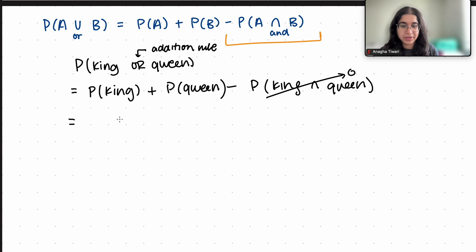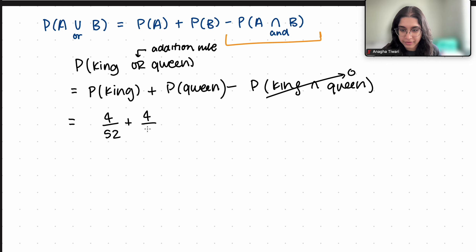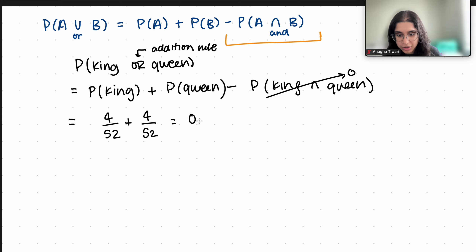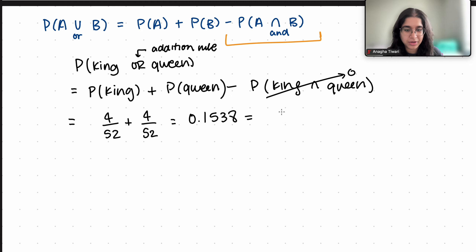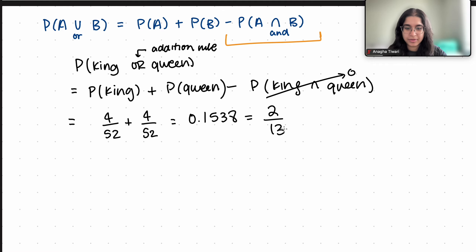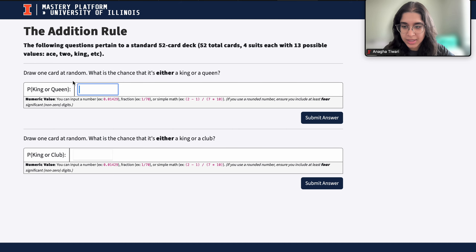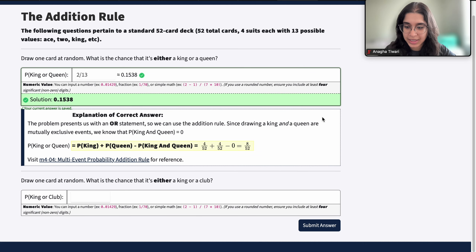In a standard deck of cards there are four kings out of 52, so P(king) = 4/52. Same thing for queens — four out of 52 cards are queens. So the actual probability is 8/52, or 0.1538, which simplifies to 2/13. That is the correct answer.